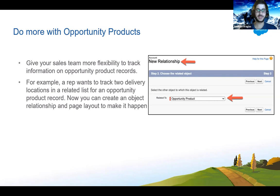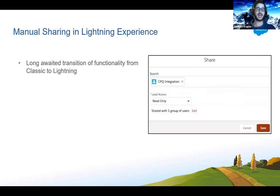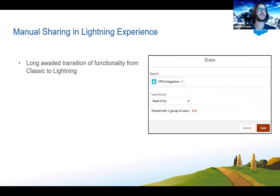A lot of people in the chat are loving Dynamic Actions — they're awesome. The next one is a big one: manual sharing is now available in Lightning Experience. Before, it was in Classic — that share button was always there — and it was a long-awaited transition from Classic to Lightning. I've seen countless times where people have been asking for it. You can now manually share records between users and groups.